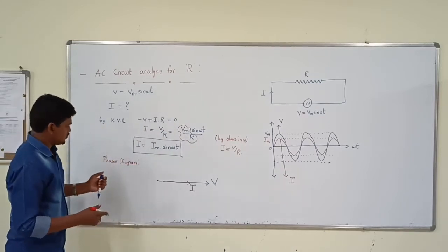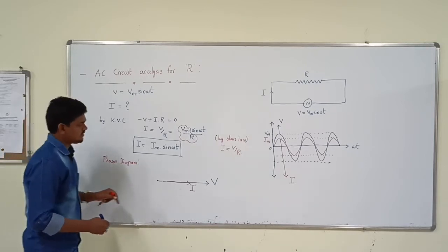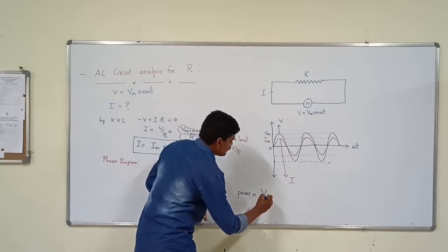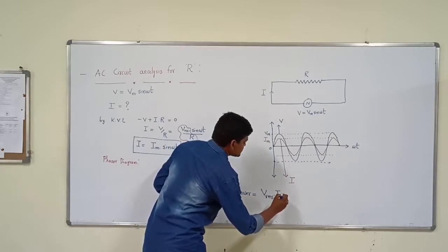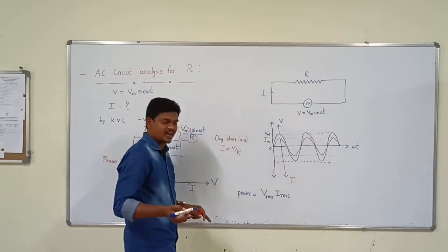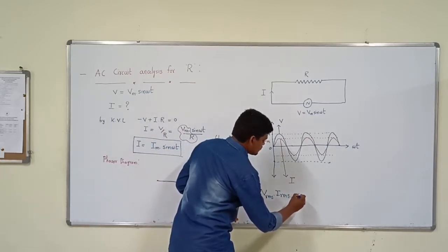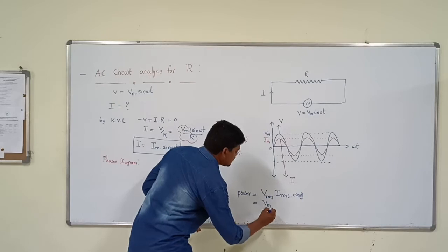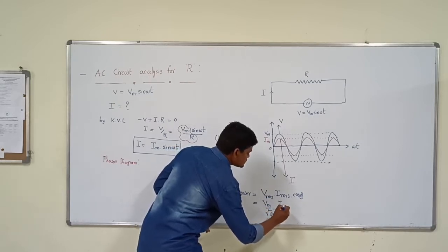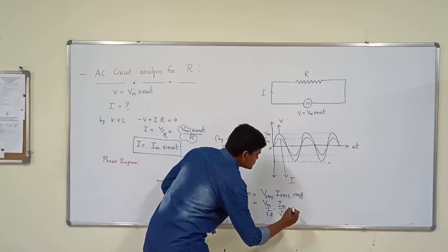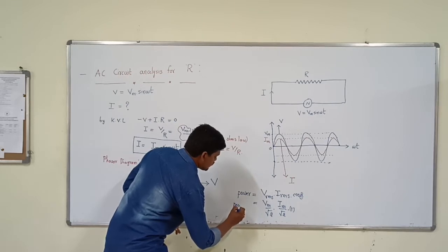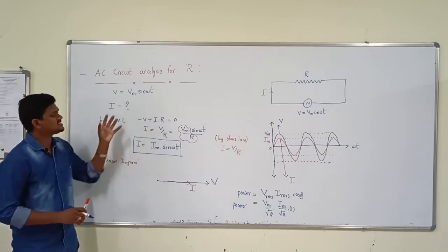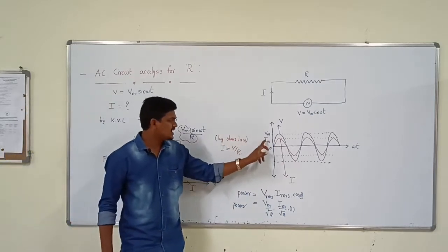Then we will write the power equation. Power across the resistor is Vrms into Irms directly, because there is no power factor effect — actually, power factor for the resistor is always 1. So power equals Vrms, which is Vm by root 2, multiplied by Irms which is Im by root 2, and cos phi equals 1.